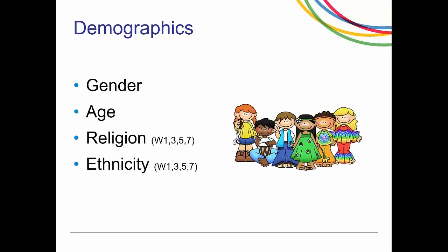First we ask about demographics. Gender and age are asked at every wave. However, religion and ethnicity are only asked in the odd-numbered waves.